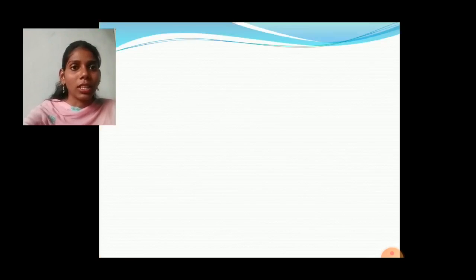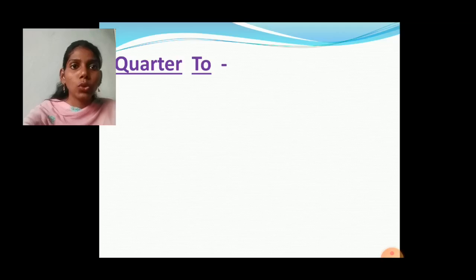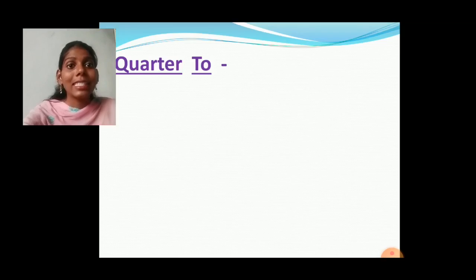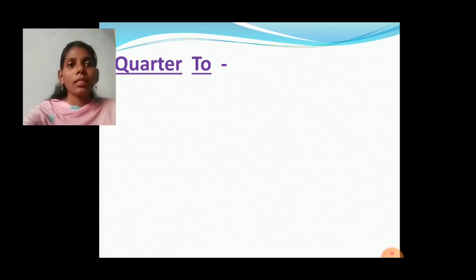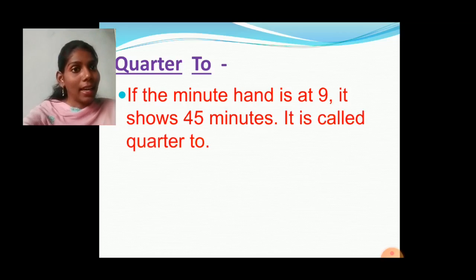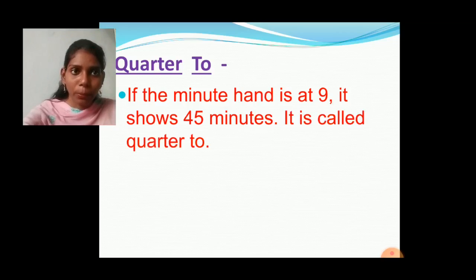Now see the spelling: Q-U-A-R-T-E-R, quarter T-O. It is not T-W-O, it is T-O. Now if the minute hand is at 9, it shows 45 minutes and it is called quarter to.